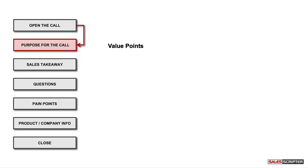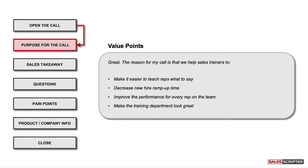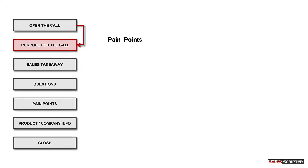For example, we can use our value points as the purpose for our call by saying something like this: "The reason for my call is we help sales trainers to make it easier to teach their reps what to say and ask, and decrease new hire ramp-up time." You could also use your pain points building block as the purpose for your call.